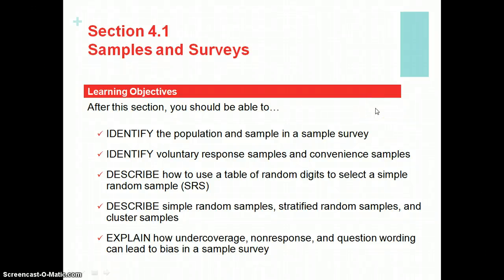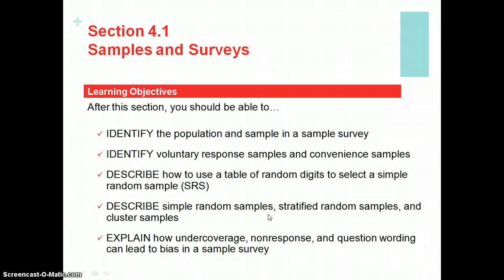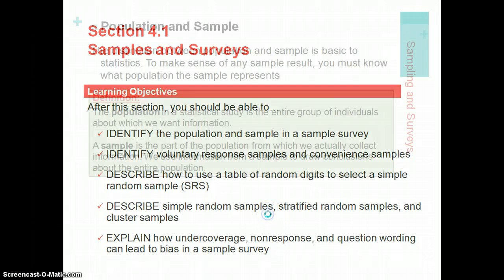This screencast is going to lead you through some of the basics in Chapter 4, Section 1, dealing with samples and surveys. We're going to take a look at the difference between populations and samples, different types of samples that are bad — voluntary response samples and convenience samples — and the correct way to select a sample, as well as other types of random samples besides simple random sample.